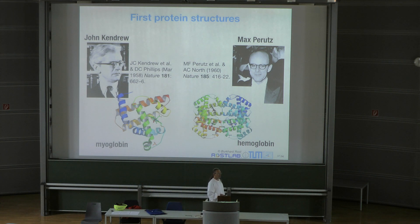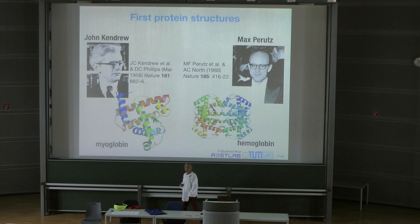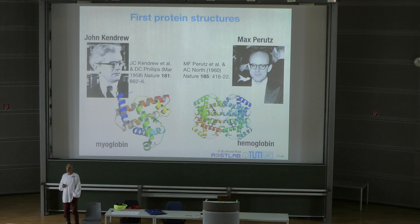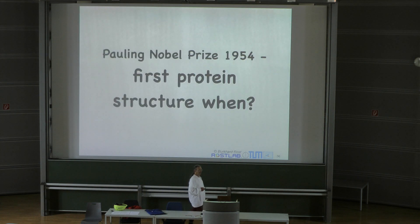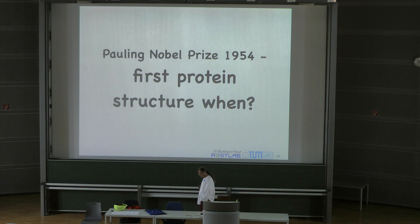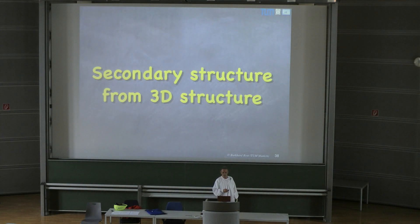And looking at these two first structures — they're all helices. Structure number three came in 1967, and it was also all helices. Then people sort of began to wonder whether the Nobel Prize to Linus Pauling on hydrogen bond formation with beta strands was really right. It took until the seventies until somebody really saw a beta strand in a structure.